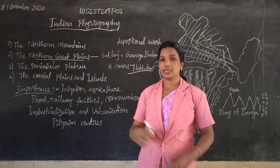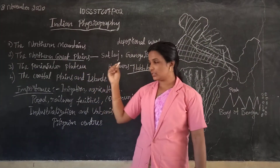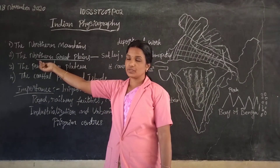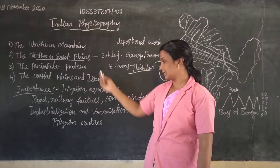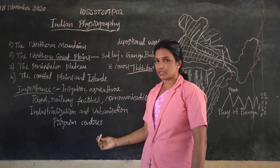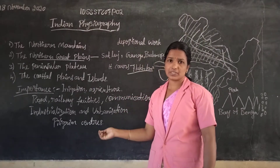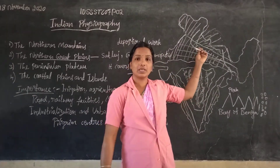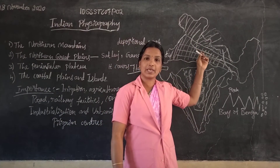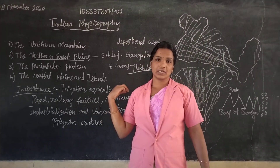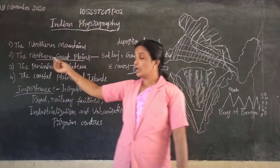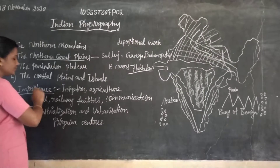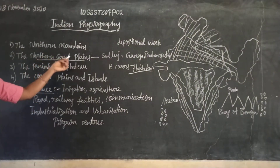Cities are also improved in this Northern Great Plain. These are the importances of the second physiographic division of India — the Northern Great Plain. It is also a pilgrimage center. Many pilgrimage centers are there. Pilgrim means a tirtha yatra — many temples are also found in this Northern Great Plain, and people pilgrim to these centers.